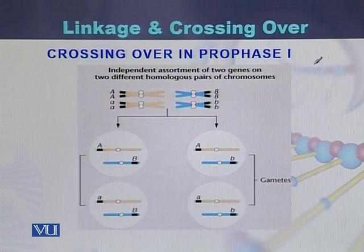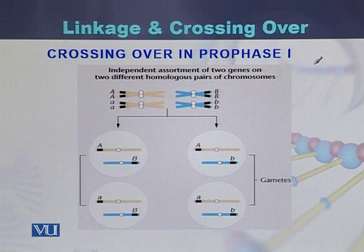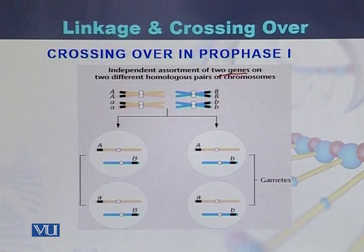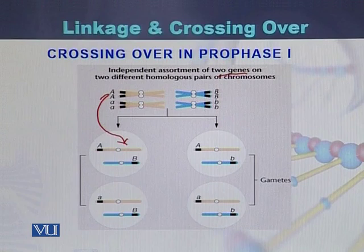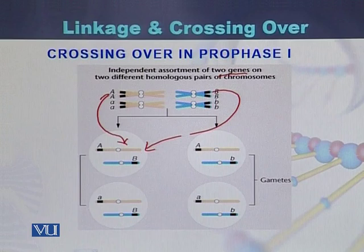In this diagram we can see crossing over in prophase I. If two genes have independent assortment, it means there is no crossover between the homologous chromosomes. One chromatid of this homologous chromosome is here while the second is on a different pair, so between two different homologous pairs there will be no crossover. Crossover only occurs within a single set of homologous chromosomes.